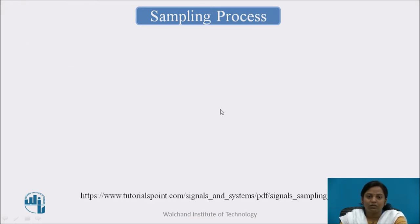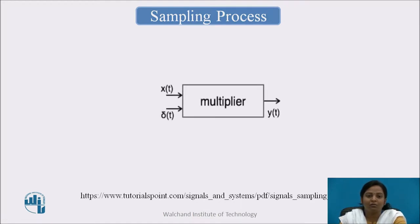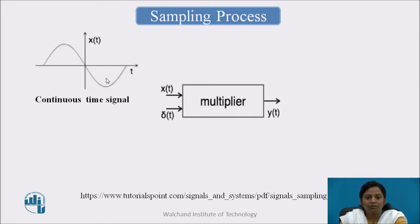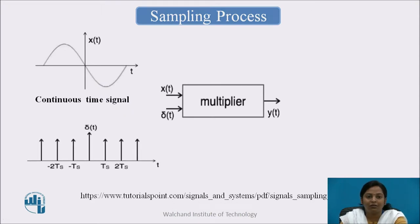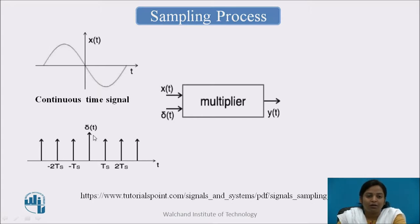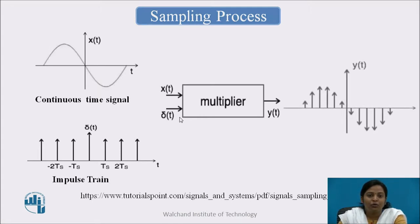In the sampling process, the basic block is a multiplier. This multiplier has two inputs. The first input is the continuous time signal x(t), which is a strictly band-limited signal. The second input is δ(t), which is a train of unit impulses. Each impulse is spaced from each other by time period ts. This is also called the sampling function. This train of impulses samples the continuous time signal, so at the output of the multiplier we get the sampled signal, where each sample is spaced by time period ts.